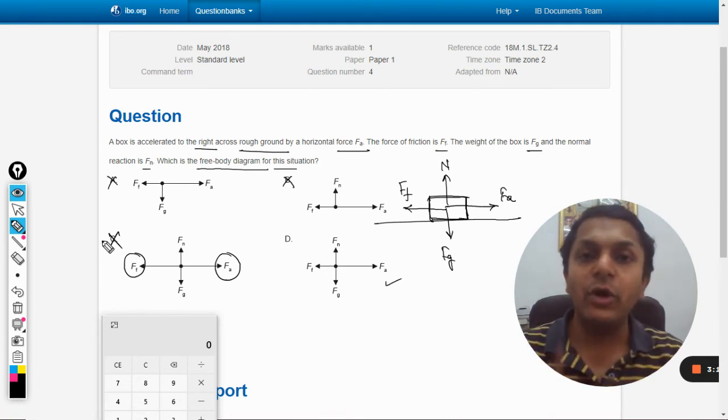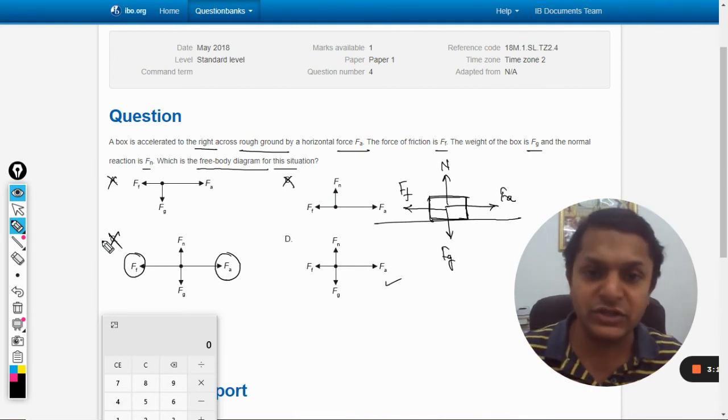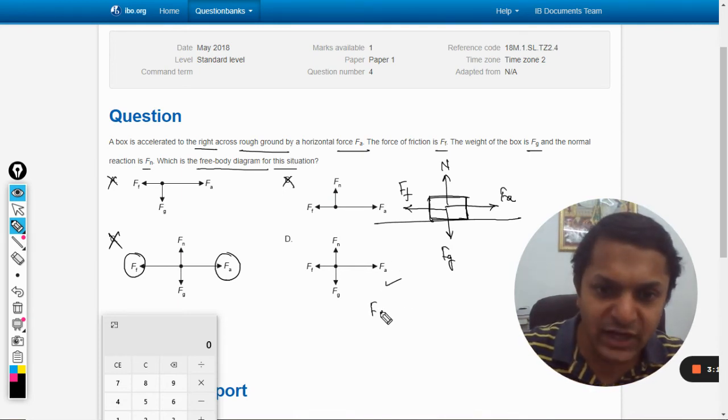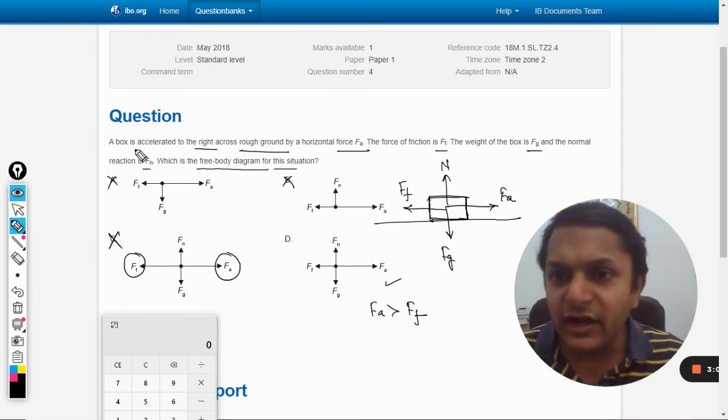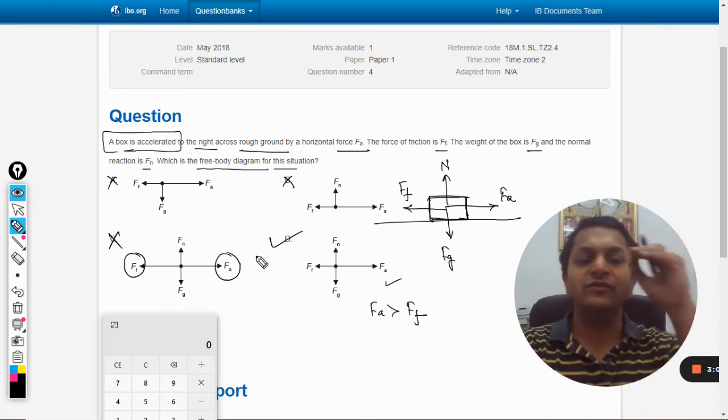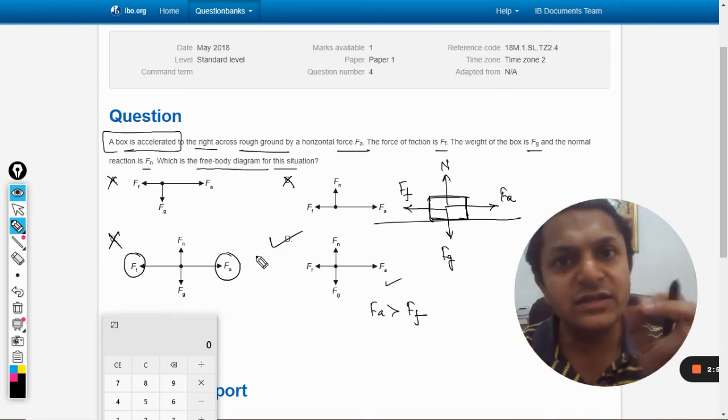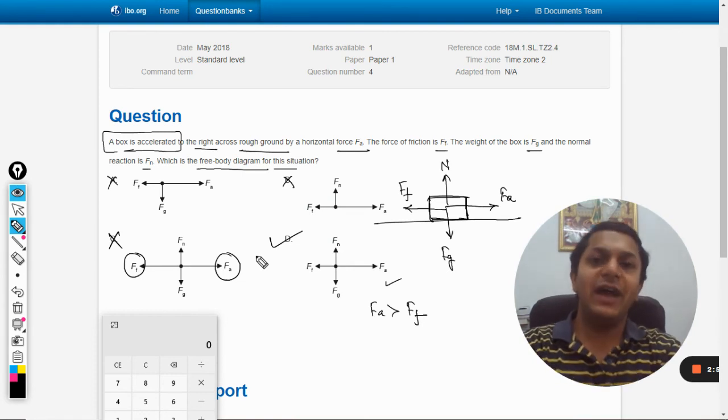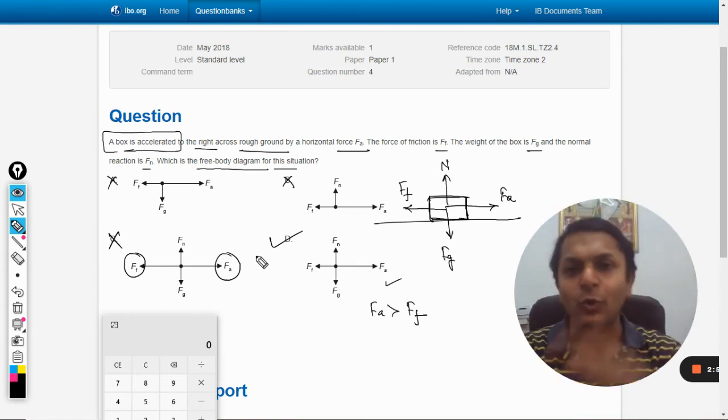So C option is wrong because it is written that the body is getting accelerated. It means the right side force will definitely be more than the left hand side forces. Fa has to be more than Ff, otherwise acceleration will not happen. They are saying the box is getting accelerated, so our answer is definitely D. If you face any problem, please do let me know. Bye.